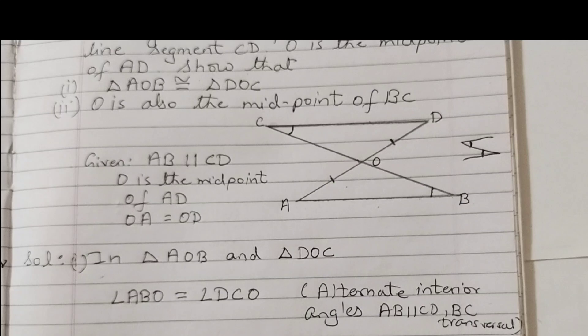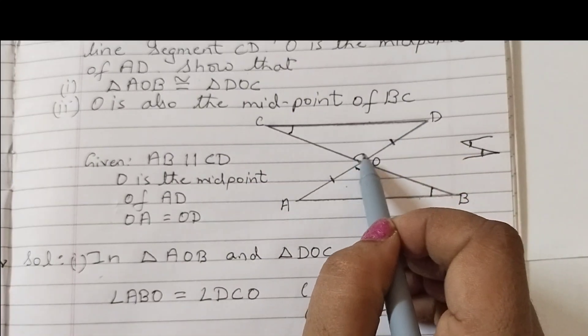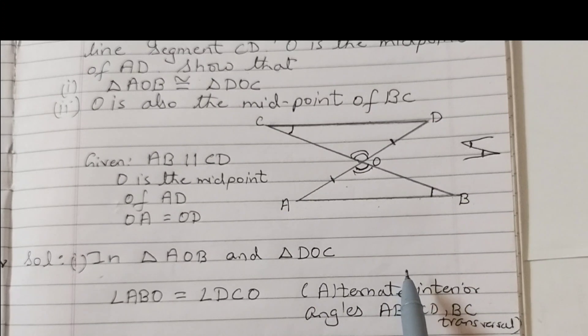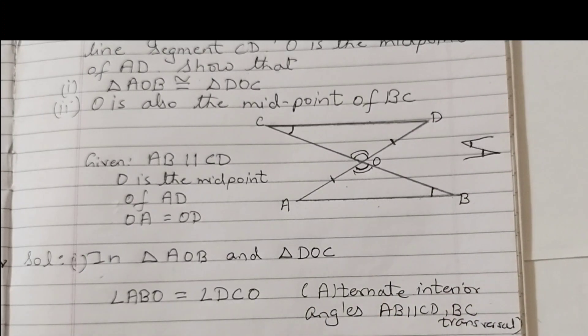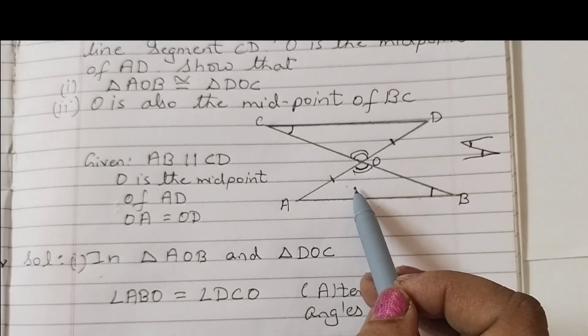Angle AOB is equal to angle DOC because these are vertically opposite angles. And OA is equal to OD, that is given to us.